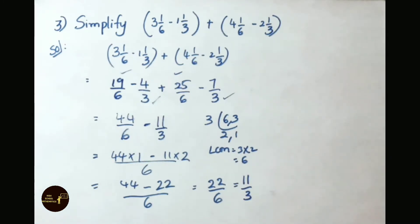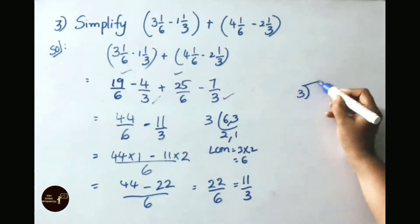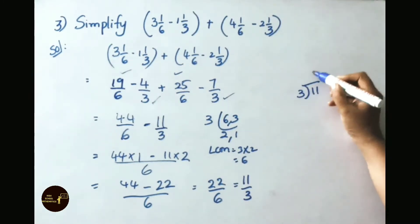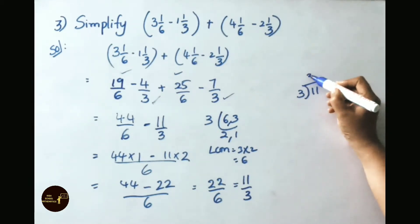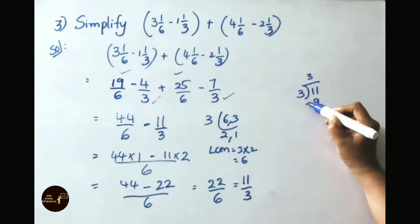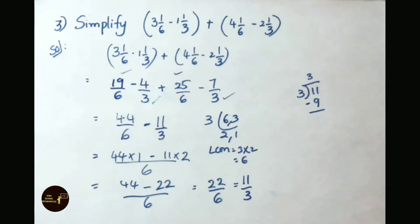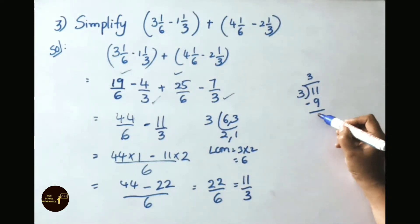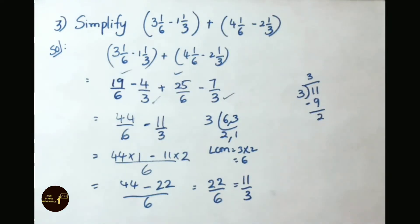Now this can still be simplified by doing division. 3 divides into 22: 3 times 3 is 9, 11 minus 9 is 2. So the answer is 3 and 2 by 3.